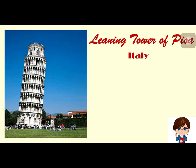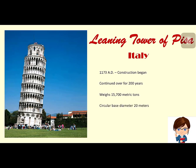Probably one of the most famous examples of problems related to soil bearing capacity prior to the 18th century is the Leaning Tower of Pisa in Italy. Construction of the tower began in 1173 AD and continued in various stages for over 200 years. The structure weighs about 15,700 metric tons and is supported by a circular base having a diameter of 20 meters.